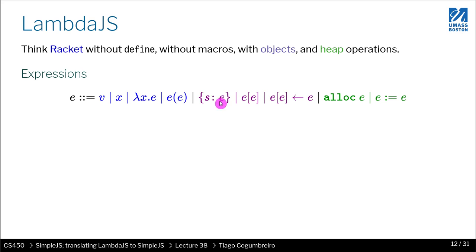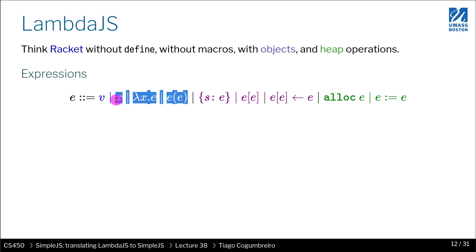The key point is that objects in Lambda.js are immutable, although in JavaScript they are not.